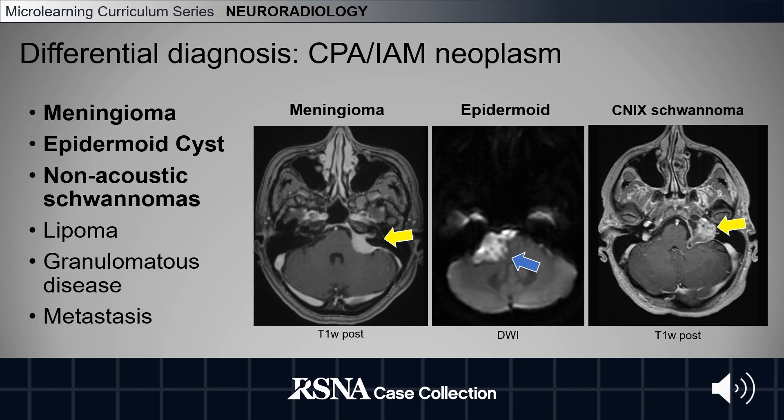The differential diagnosis for a CPA or IAM neoplasm includes meningioma, epidermoid cysts, non-acoustic schwannomas, lipoma, granulomatous disease, and metastases. The meningioma is not typically centered around the IAM — it's centered lower and looks like it's growing into the IAM. The epidermoid cyst does not enhance on contrast and has reduced diffusion on diffusion-weighted imaging.